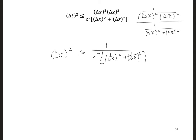And so finally then we can just take the square root. So we have delta t has to be less than 1 over c squared of 1 over delta x squared plus 1 over delta z squared.